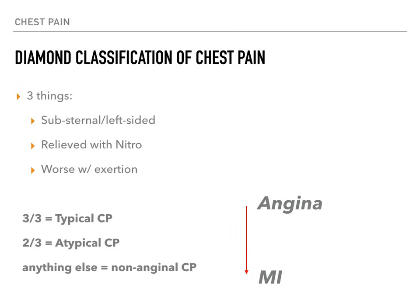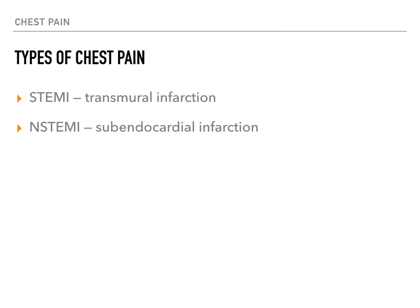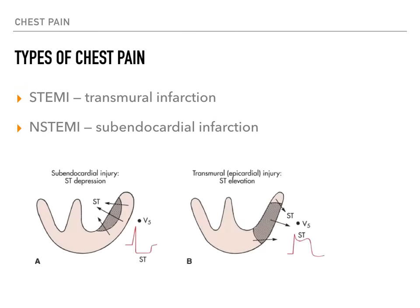Let's switch gears and talk about the different types of myocardial infarctions — specifically the STEMI and the NSTEMI. High yield for Step 1 and Step 2 is understanding the depth of cardiac tissue involved. The STEMI is a transmural infarction, meaning the entire thickness of the wall is affected. In the NSTEMI, it's just subendocardial — just that first little layer below the endocardium.